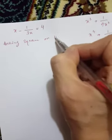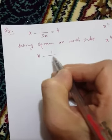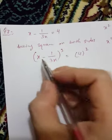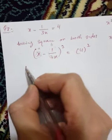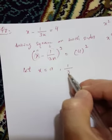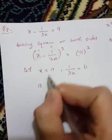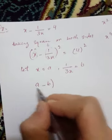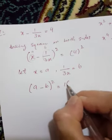Taking square on both sides, we get x minus one over three x squared equals from squaring. From squaring, we get this. Let's assume x equals a and let's assume b equals one over three x. Then a minus b squared equals sixteen, because four squared is sixteen.